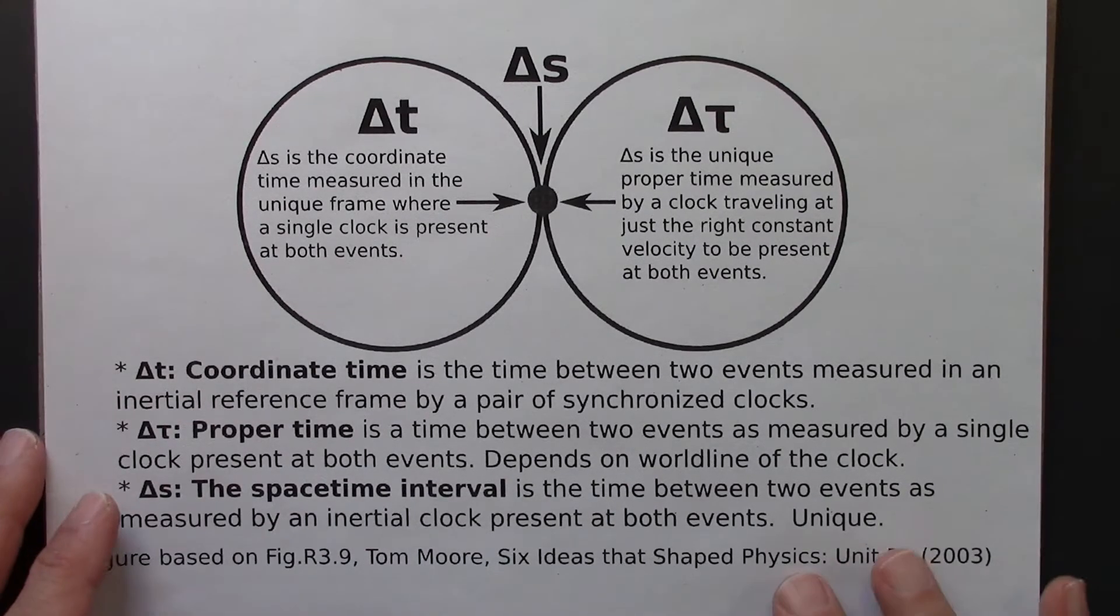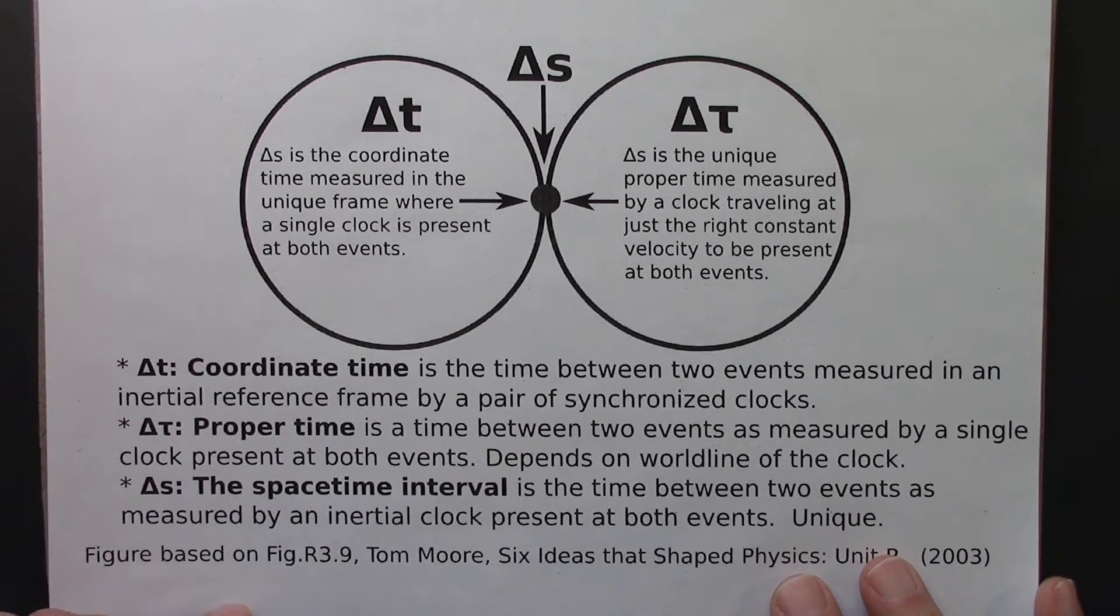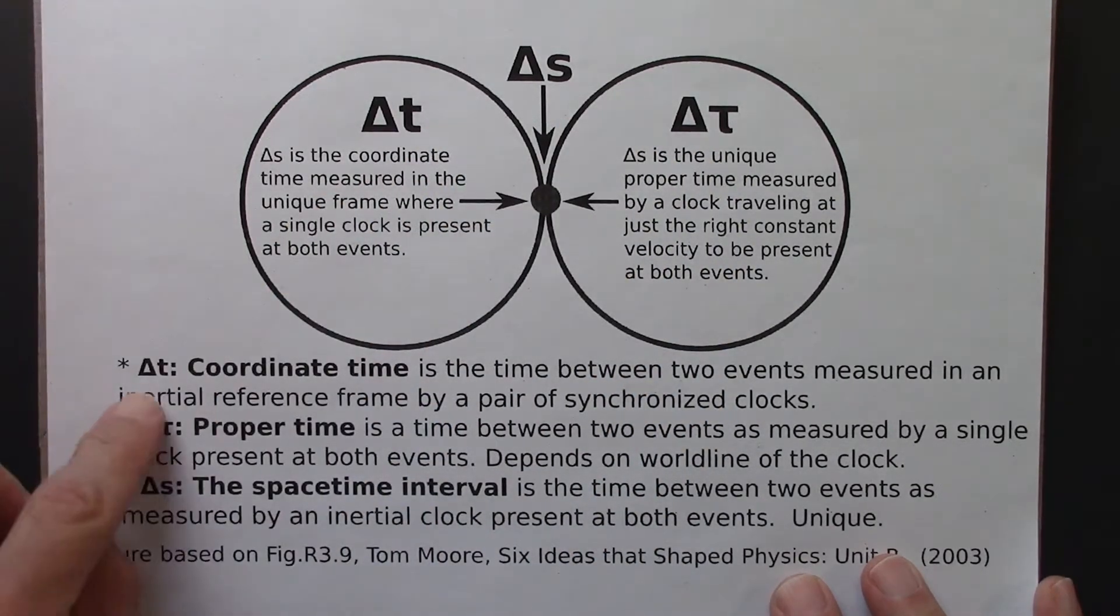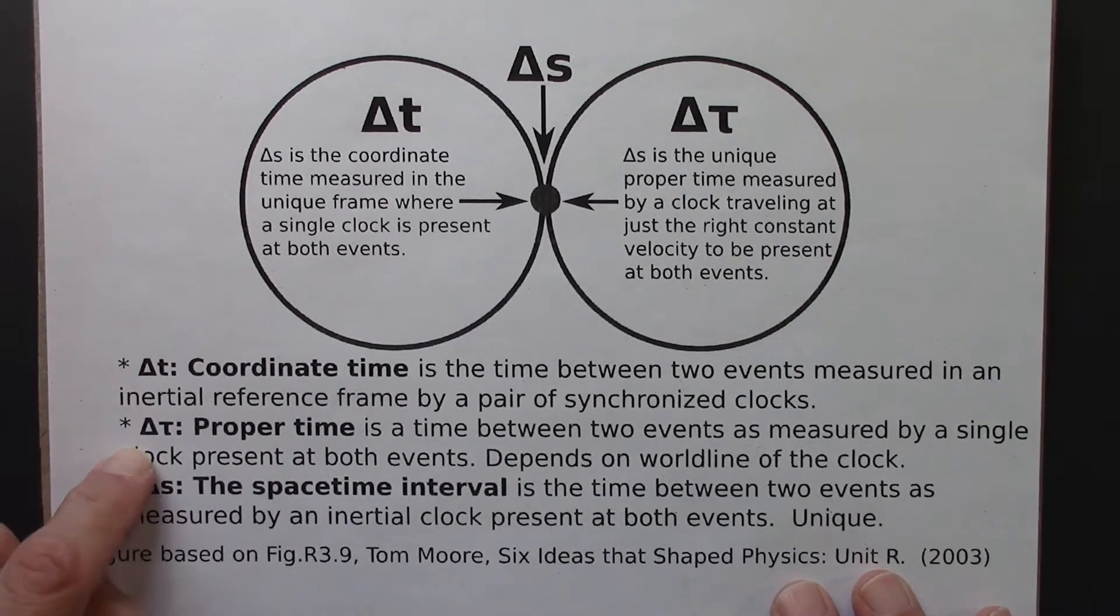So this figure, I think, will help us think through the differences among these three types of time intervals, the coordinate time delta t, proper time interval delta tau, and the spacetime interval delta s.